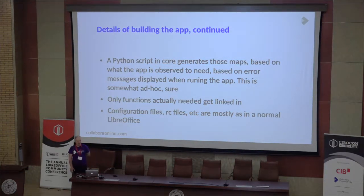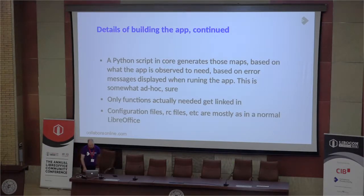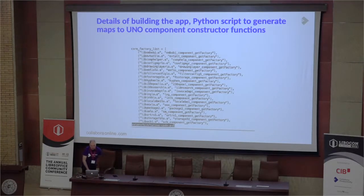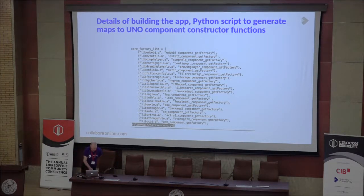These maps from UNO component names to function pointers are generated by a Python script. This script is a bit ad hoc written, and whenever you notice that something is missing at runtime when you run the app, you need to add one more line to that script. But otherwise, all the configuration files — the RC files — exist in the app more or less like in normal LibreOffice. The Python script has a list of library names and the corresponding component creation functions.